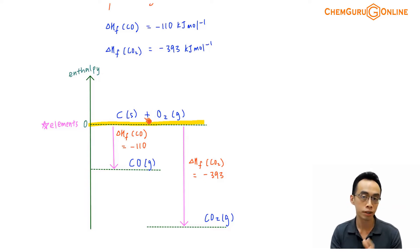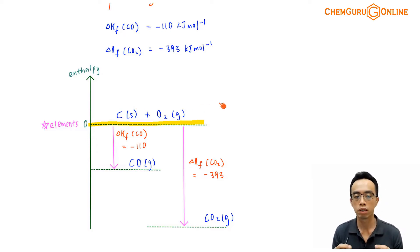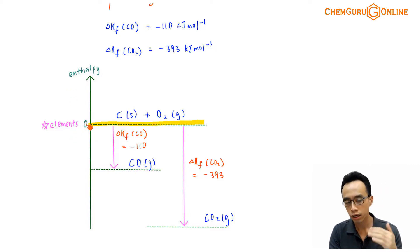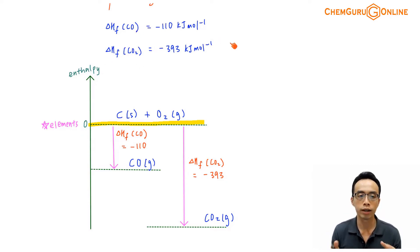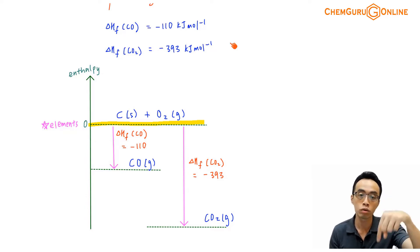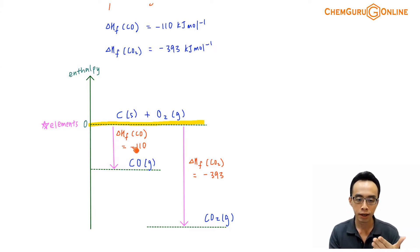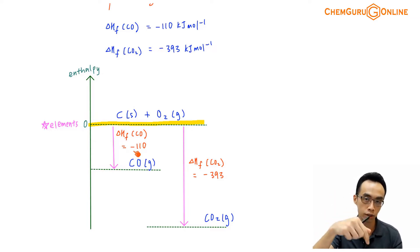By definition, the enthalpy of elements in their standard state is a zero value. So if this were a structured question and we want to present this as our answer, please remember to indicate this enthalpy as a zero value — otherwise there will be marks deducted. Now let us consider the formation of carbon monoxide. We know the enthalpy change of formation of carbon monoxide is minus 110 kJ per mole, and therefore the process should be pointing down — it is exothermic. So this arrow pointing down represents carbon monoxide, with a value of minus 110.